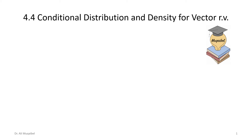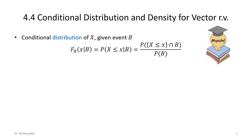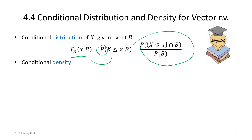We now move to the conditional distribution and density for a vector of random variables. For the conditional distribution of X given event B, the conditional CDF can be written in terms of the PDF and probability. The conditional property is defined as the joint divided by the probability of the condition. We extend this to the conditional density function, which is related to the conditional CDF by taking the derivative.